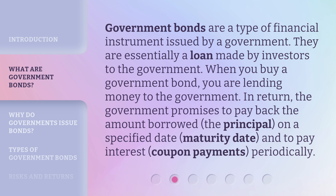Government bonds are a type of financial instrument issued by a government. They are essentially a loan made by investors to the government. When you buy a government bond, you are lending money to the government. In return, the government promises to pay back the amount borrowed — the principal — on a specified date, the maturity date, and to pay interest, known as coupon payments, periodically.